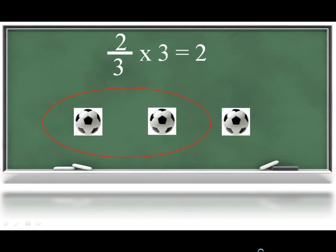Extending this thinking to fractions, the expression 2 thirds times 3 would be understood as 2 thirds of a group of 3, which would be 2.